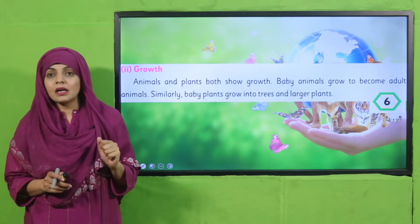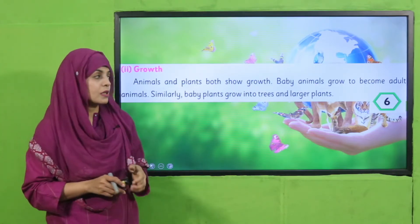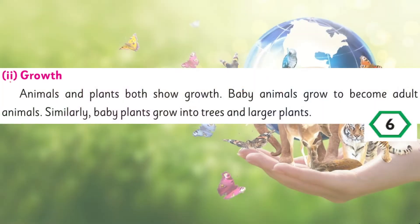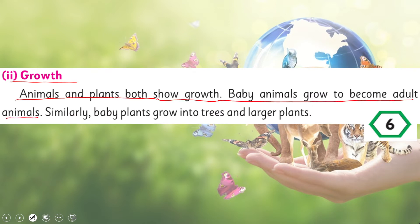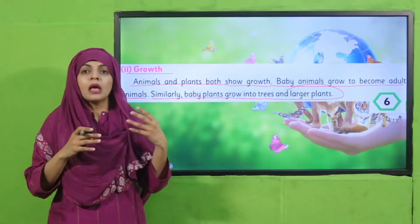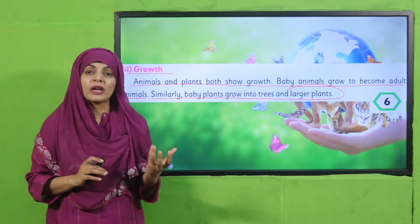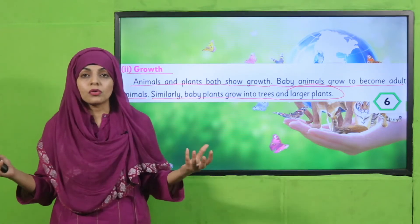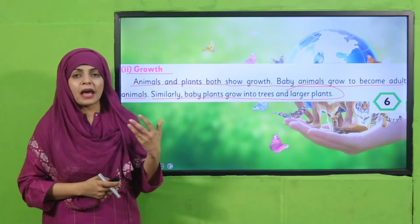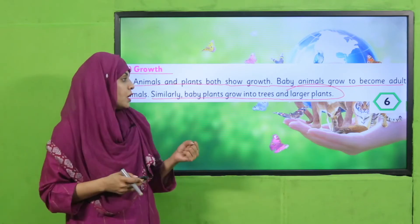Next characteristic is growth. 'Animals and plants both show growth. Baby animals grow to become adult animals. Similarly, baby plants grow into trees and larger plants.' Both show growth — baby plants grow from seeds, become seedlings, then tiny plants, and then adult plants or trees. In plants, the stem, roots, and leaves grow, whereas in animals, different body organs and parts grow.